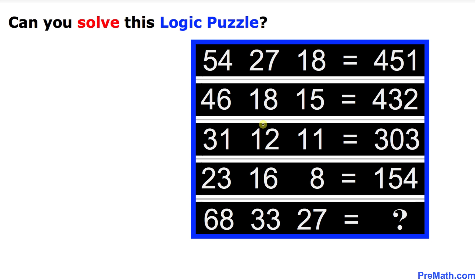Welcome to PreMath. In this video tutorial we are going to solve this logic puzzle. As you can see, we have two digit numbers and they give us a result as a three digit number. The question mark is what is going to be the answer when we are dealing with 68, 33, and 27.